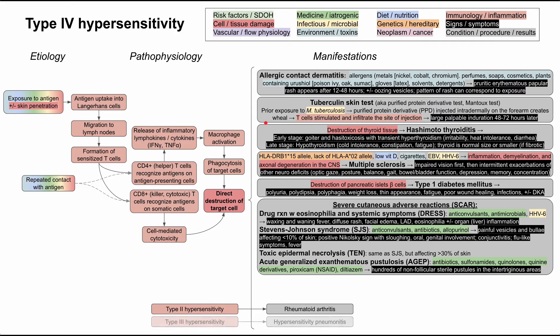It's worth mentioning that a lot of hypersensitivity can be a mixed picture. Rheumatoid arthritis involves type 2 hypersensitivity mixed with type 4, with both the acute cytotoxic effect and a delayed longer-term effect. Hypersensitivity pneumonitis is a mixture of type 3 and type 4, with immune complex deposition but also delayed direct targeting of cells with cytotoxic killer T cells.